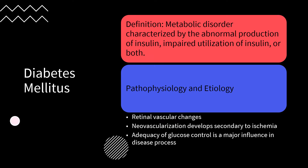Diabetes mellitus is a metabolic disorder characterized by abnormal production of insulin, impaired utilization of insulin, or both. Hyperglycemia alone can impair pancreatic beta cell function and contributes to impaired insulin secretion. Insulin resistance is attributable to excess fatty acids and pro-inflammatory cytokines, leading to impaired glucose transport and increased fat breakdown. The duration of insulin-dependent diabetes and the adequacy of serum glucose control are major influences in the development of diabetic retinopathy.